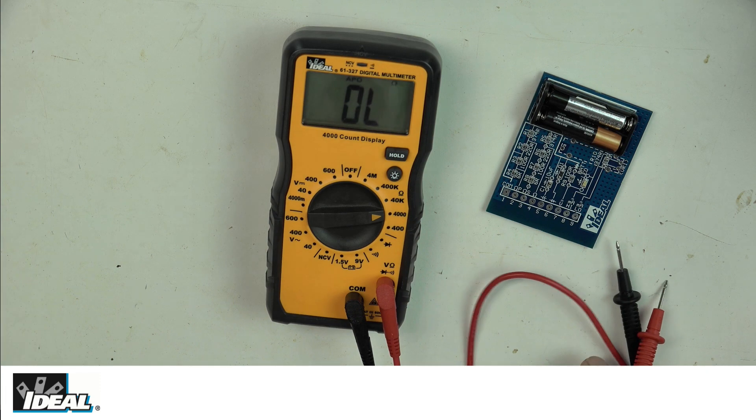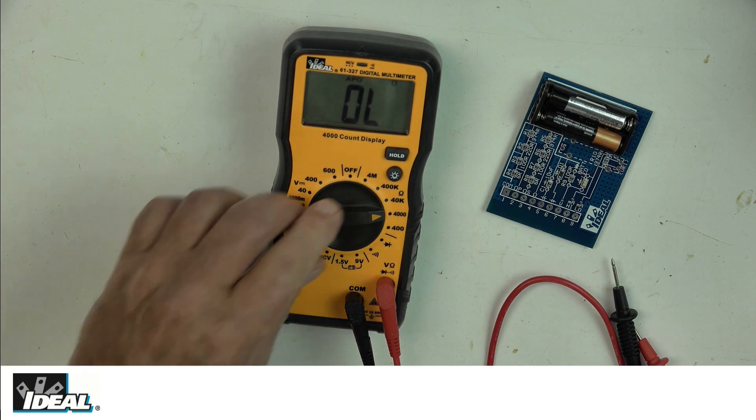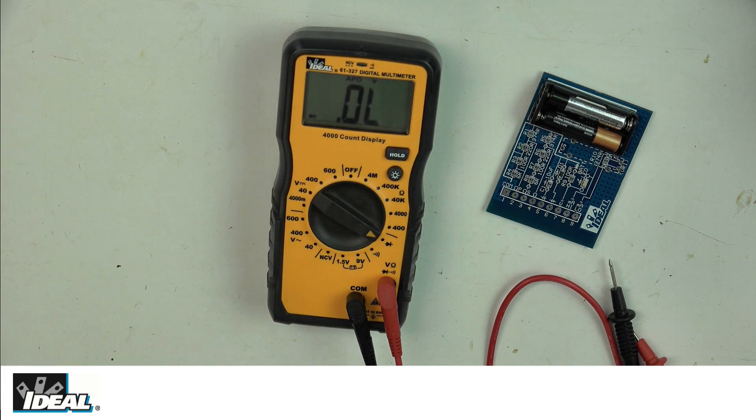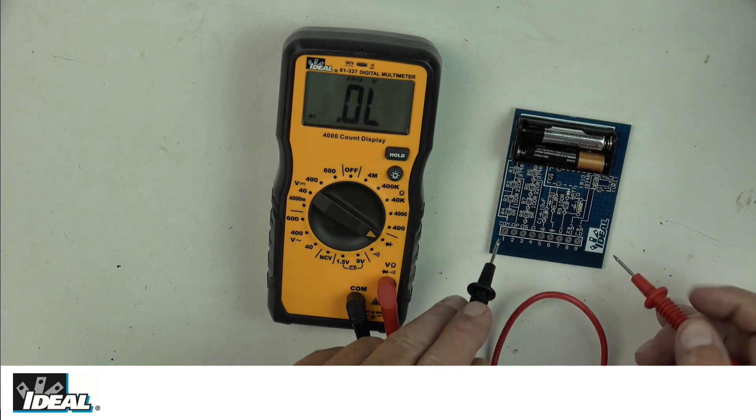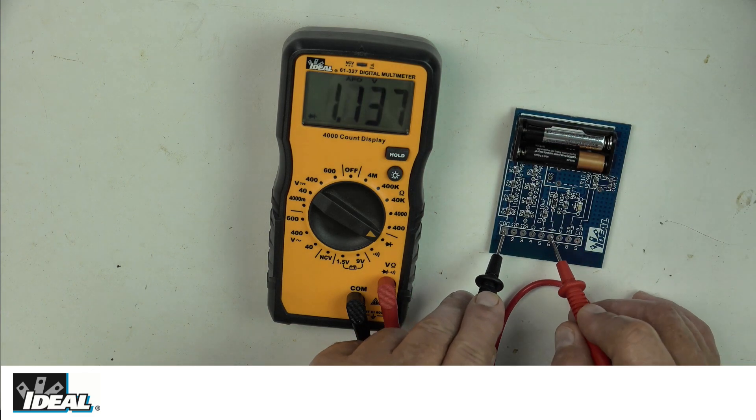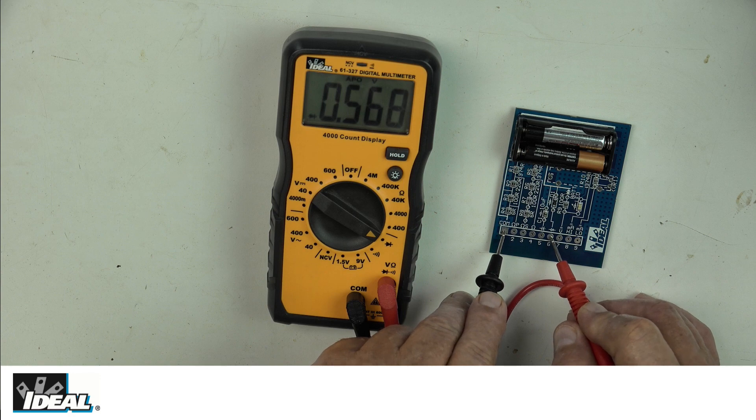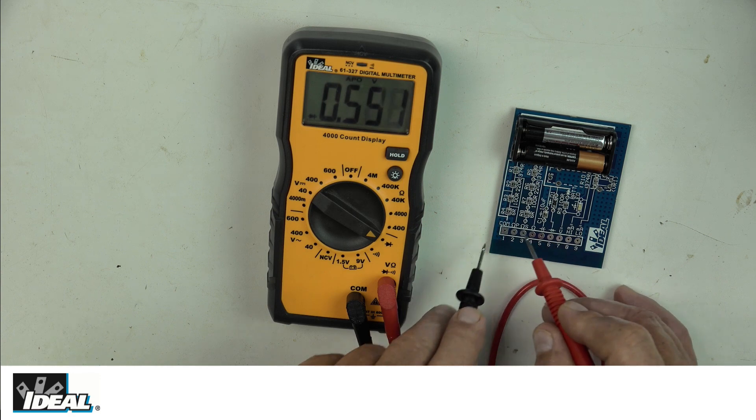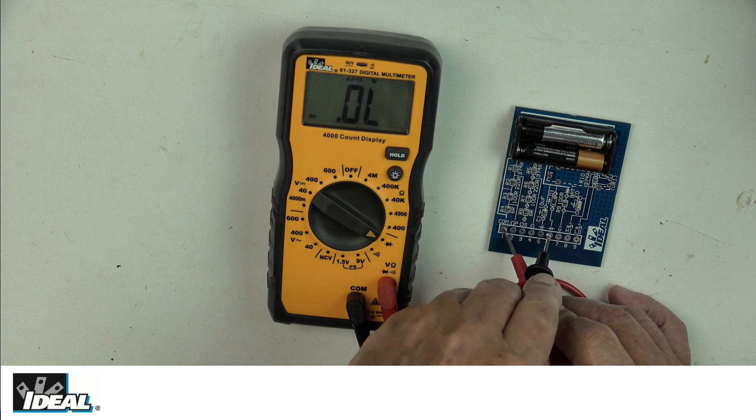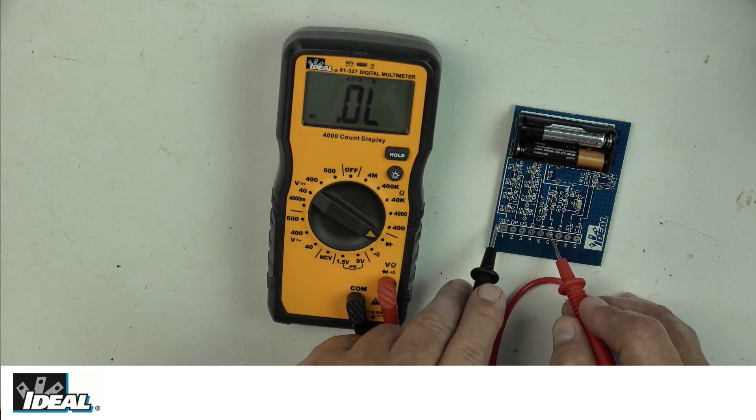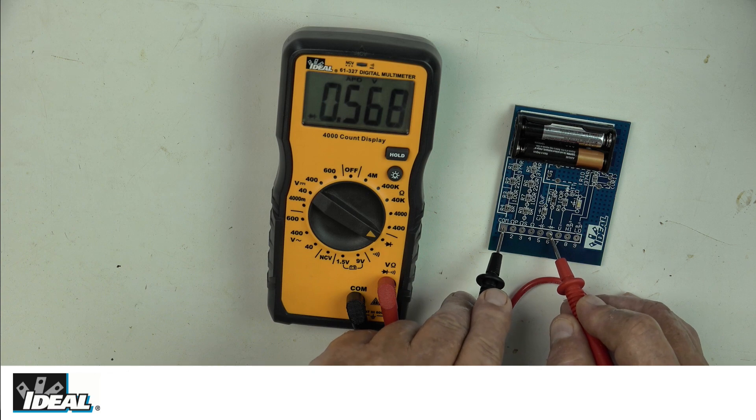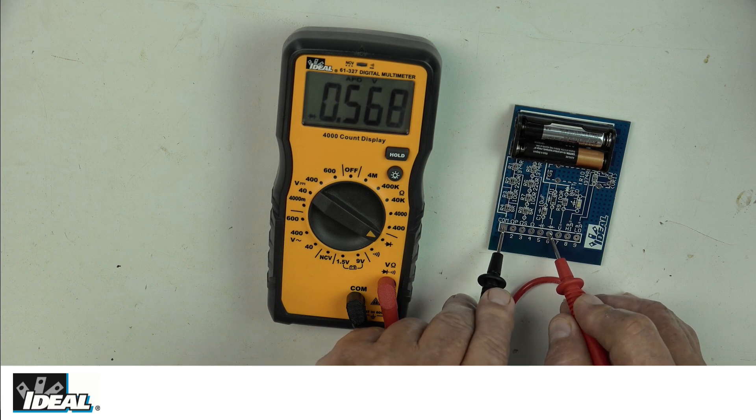The tester also has a diode. If I go to the diode setting, the diode is a simple semiconductor that only lets current flow through it in one direction only. If I go across the diode, we're reading about half a volt. But if I reverse my polarities on my test leads, I get no reading at all. A diode is good if you get a reading in one direction only.